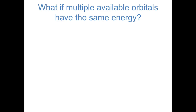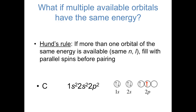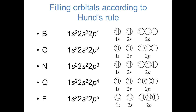When it comes to writing the ground state electron configuration of carbon, we have a choice: do we put the sixth electron in the same spatial orbital as the fifth with the opposite spin, or in another orbital? Hund's rule is an experimental guideline that answers this question: if more than one orbital of the same energy is available, electrons tend to fill orbitals with parallel spins before pairing. For carbon, the sixth electron goes into a different spatial orbital than the fifth with the same spin. So based on the Aufbau principle, the Pauli exclusion principle, and Hund's rule, we can write electron configurations for any element.